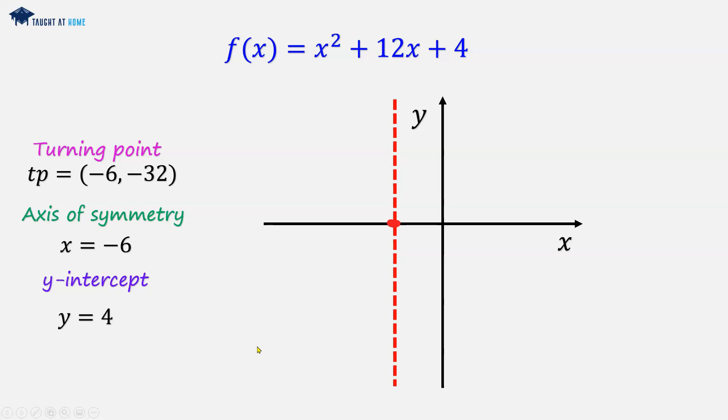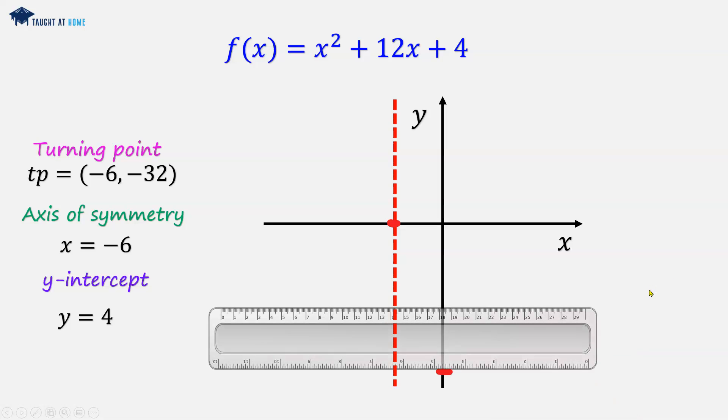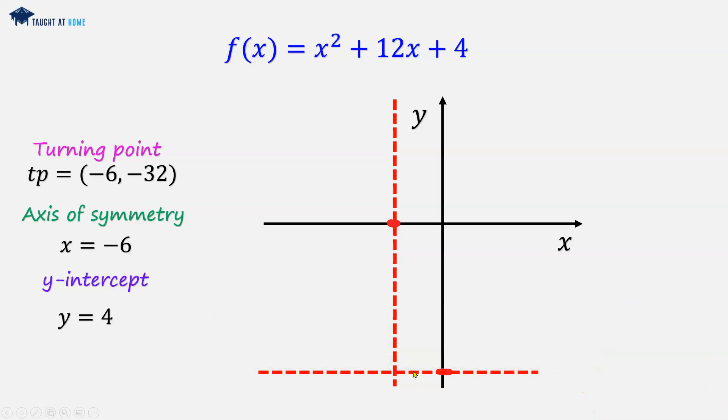All right, and now I will mark the point on the y-axis, the turning point, which is minus 32. I'll get a ruler and I'll draw a light guiding line through that. And where these two lines intersect, this will be the turning point.